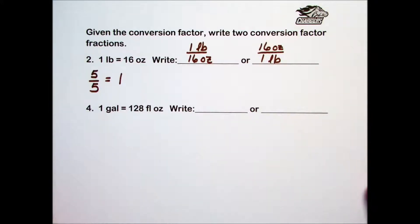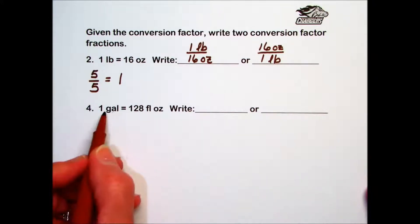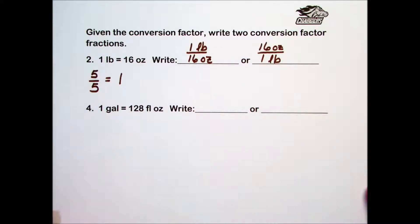In problem number four, they give us an equivalent 1 gallon equal to 128 fluid ounces. And they're asking us to write conversion factor fractions for this as well.